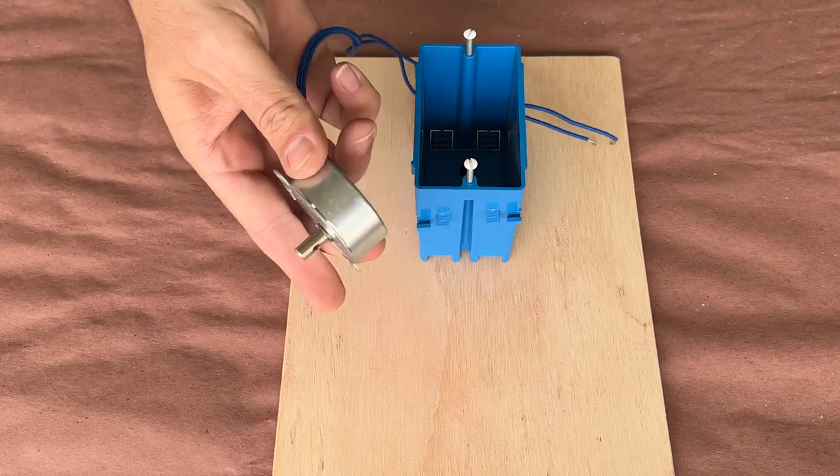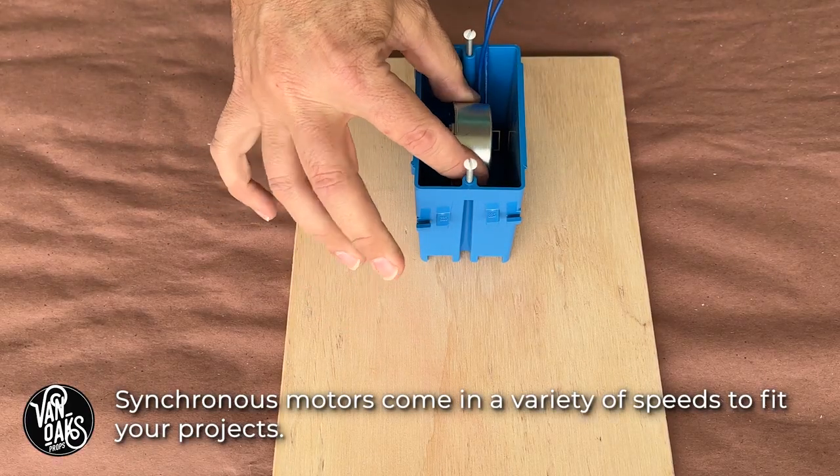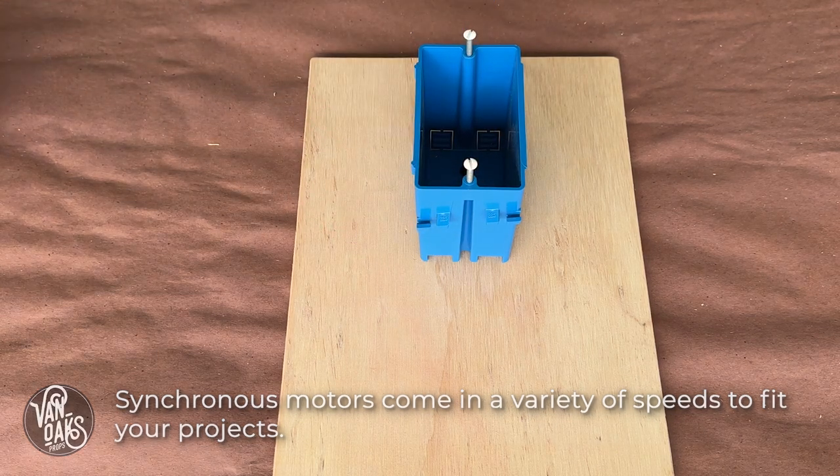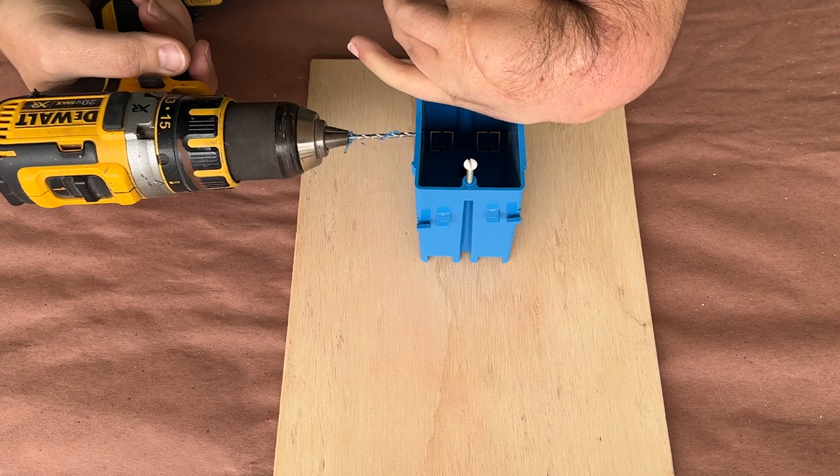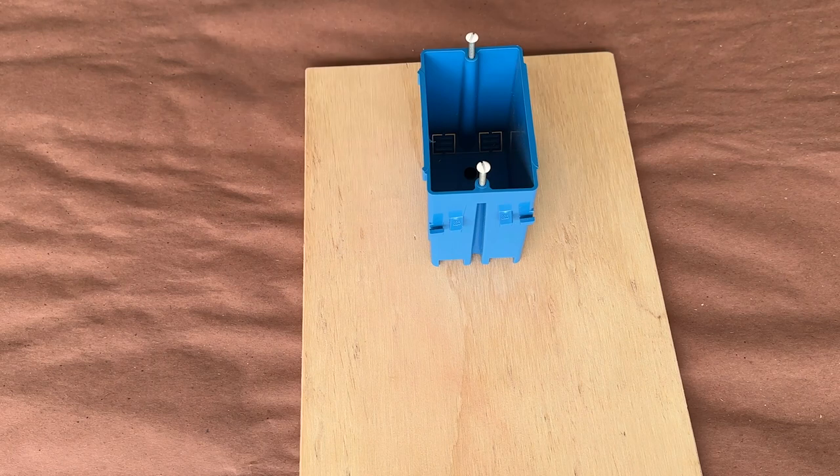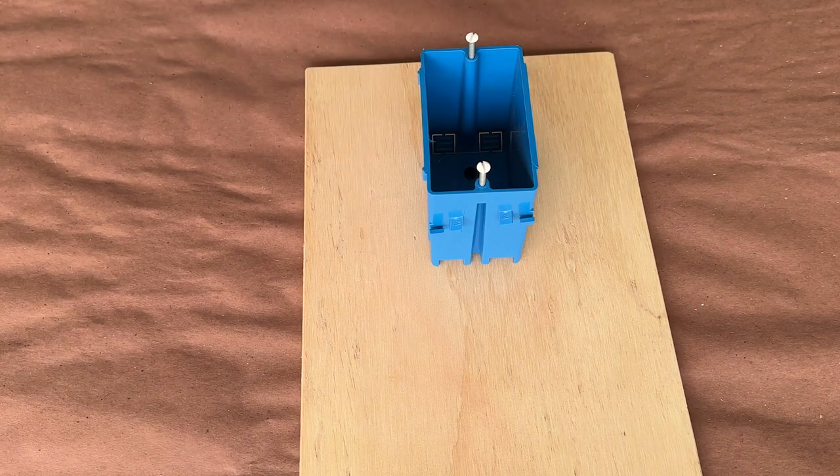Next up is to get the motor installed. This synchronous motor fits perfectly inside the box, but will need a hole added so that the motor shaft can pop out the side. Once again, I reached for my drill and created a starter hole. Then I switched over to a step-up bit to enlarge the opening.